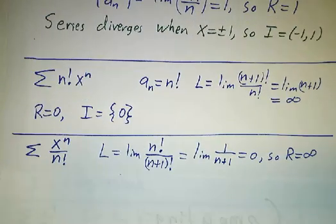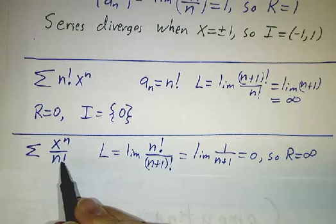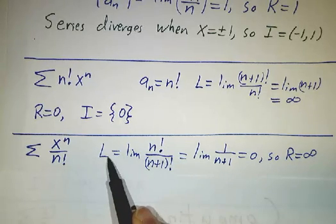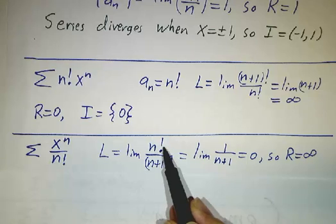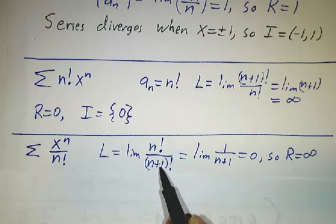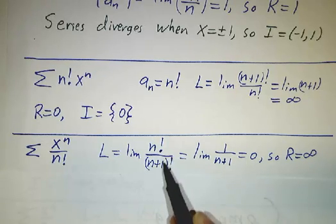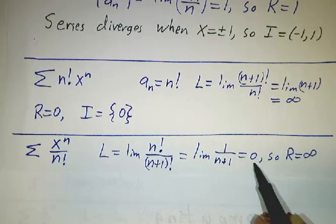The next example is the sum of x^n over n factorial. Now, L is the limit of 1/(n+1)! divided by 1/n!. In other words, n! divided by (n+1)!. That's 1 over n+1, and that goes to 0.